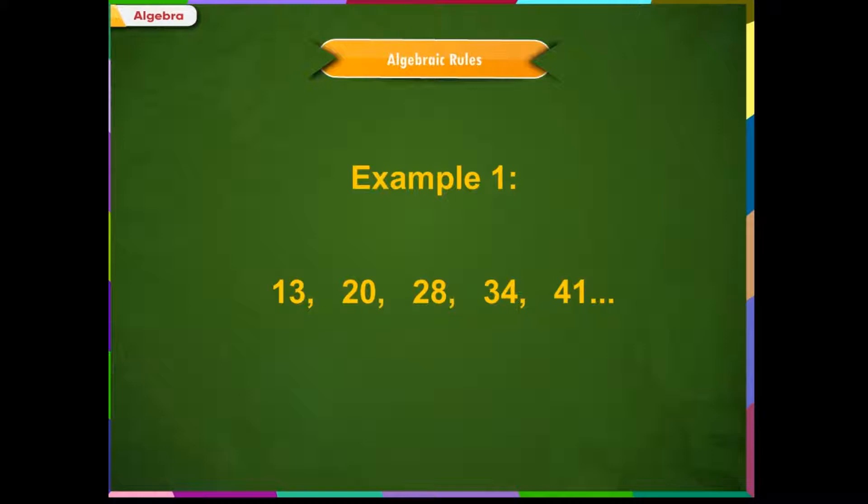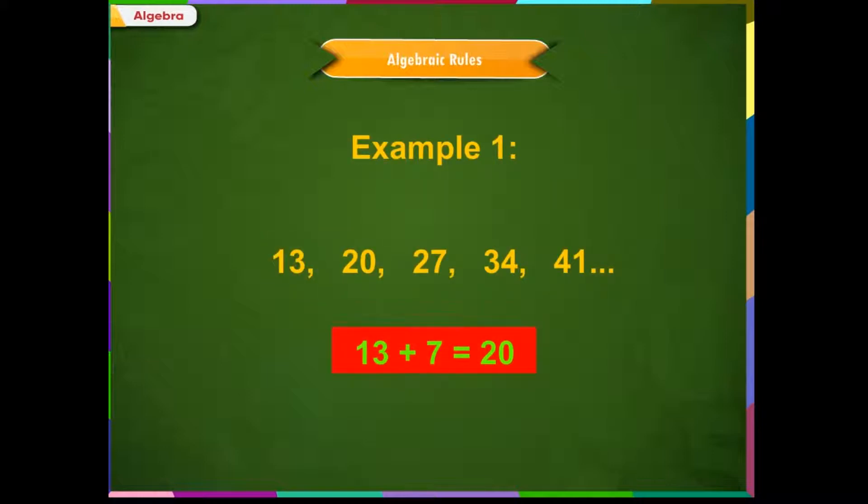The first number is 13. We add up 7 to get the second number 20. We further add 7 to get the third number 27. From 27 to 34, we add 7 again. From 34 to 41, we add 7. What we observe here is that every time the number increases by a same value, and that is 7. Whichever number we are at, every time the same number 7 is added to get the next number.